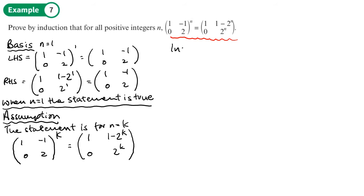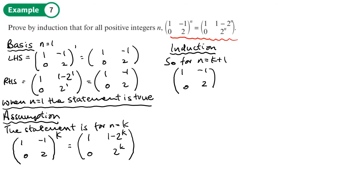Now we're on to the inductive step. For n equals k plus 1, we would have [1, -1; 0, 2] to the power of k plus 1, which equals that matrix to the power of k times by itself again — times by one more, adding 1 more to the power.